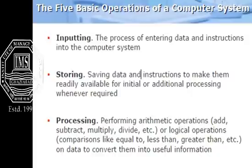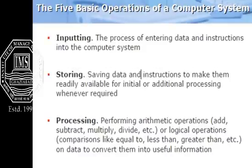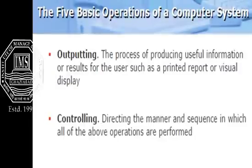Processing performs various operations on the inputted data — various mathematical and logical operations such as divide, multiply, less than, greater than, etc. This is the main critical phase of any computer organization. After that, data goes to the output devices for producing the result so the user can interact with it. The fifth operation is controlling — directing the manner and sequence of all operations — implemented by the control unit. So the five basic operations are: inputting, storing, processing, outputting, and controlling.